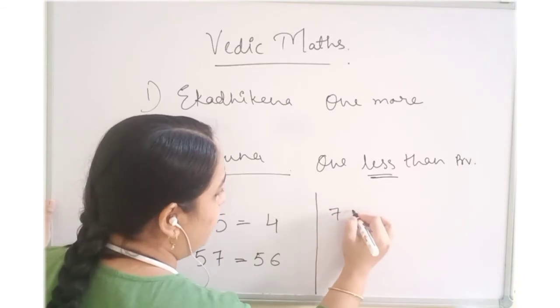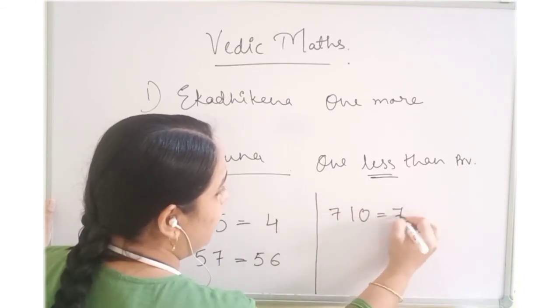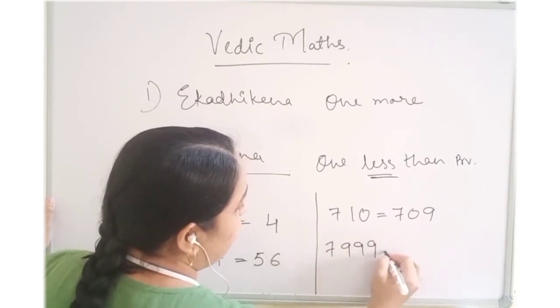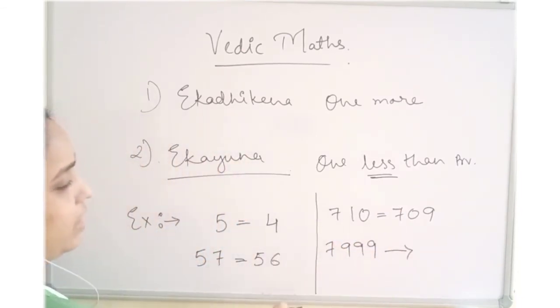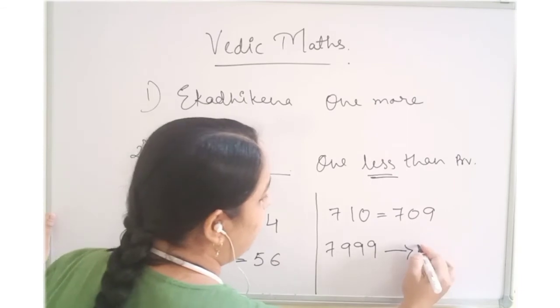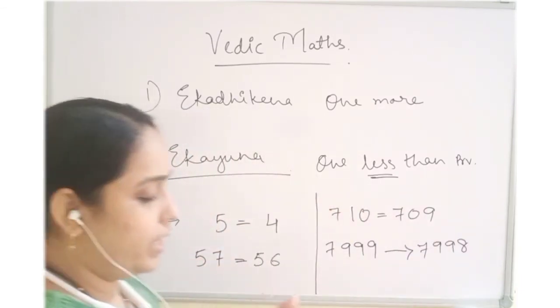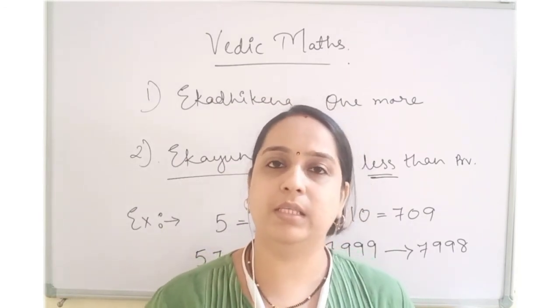Same way 710, it will be 709. 7999, what is Ikayuna of this will be 7998. This is the terminology of Vedic Mathematics.